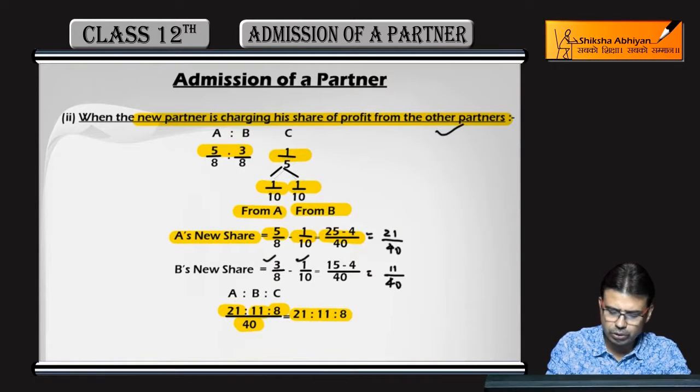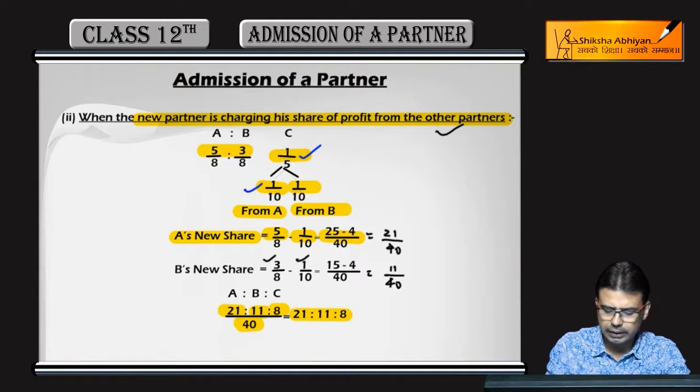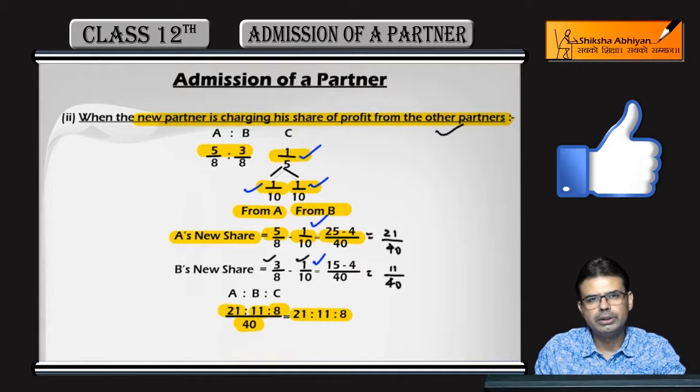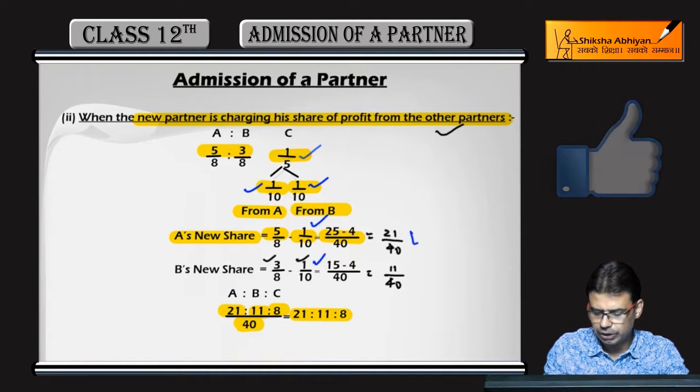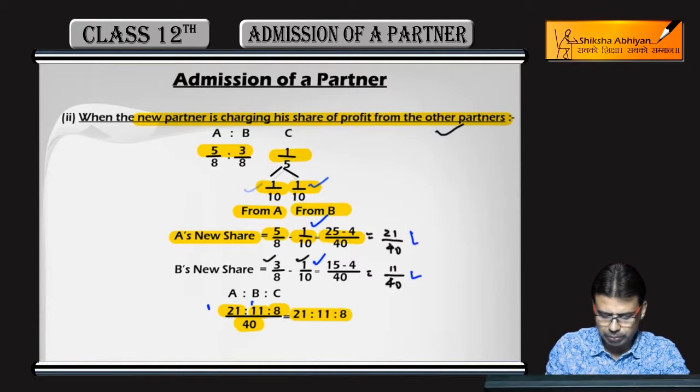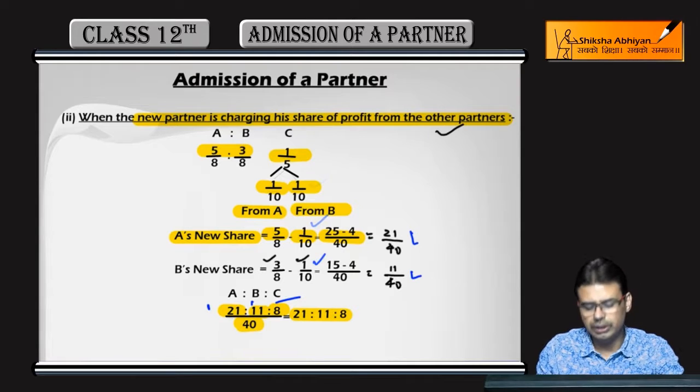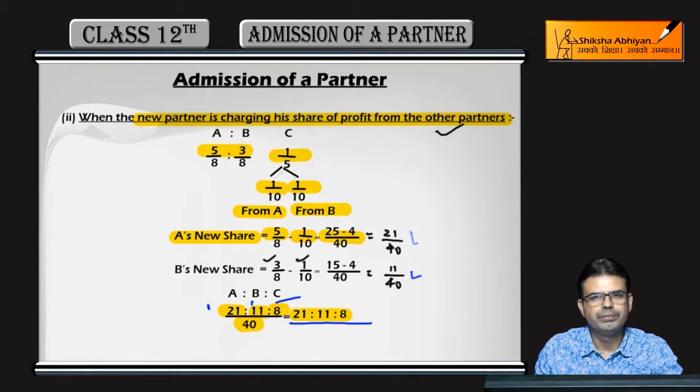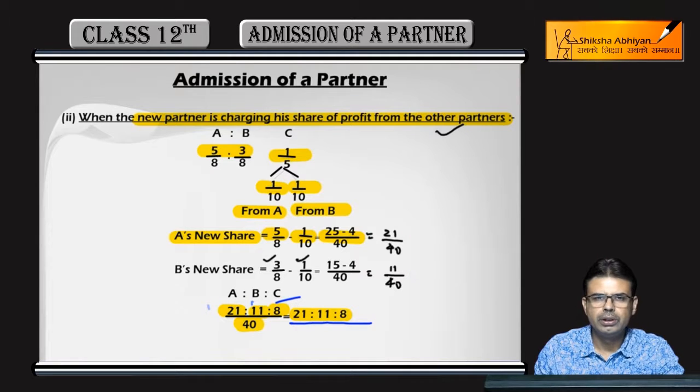In this case, the share from A and B, we will minus from A and B. We will show the net share, the new ratio.